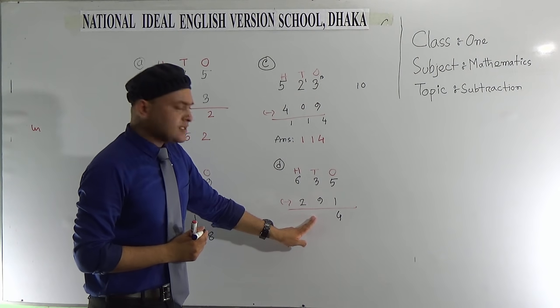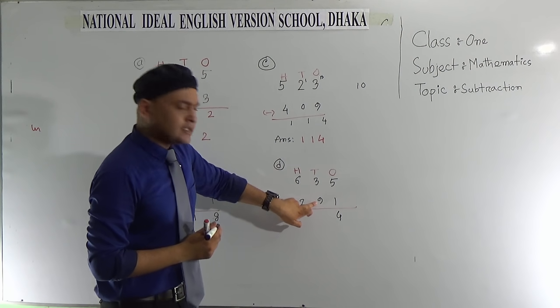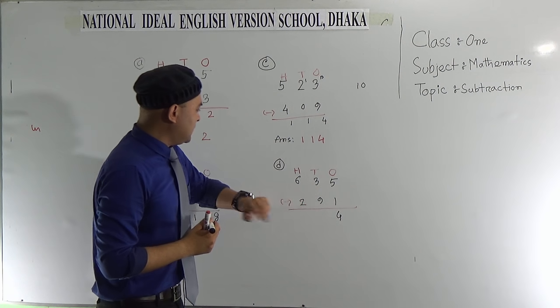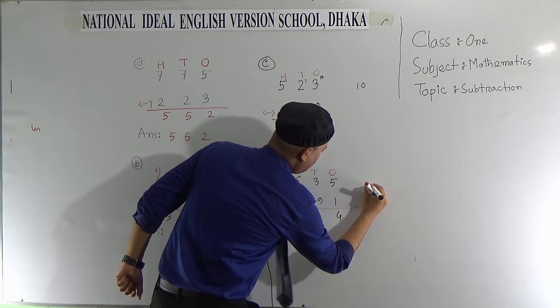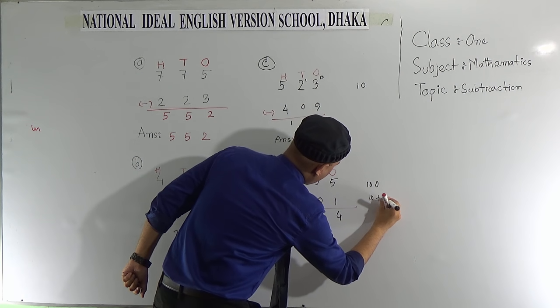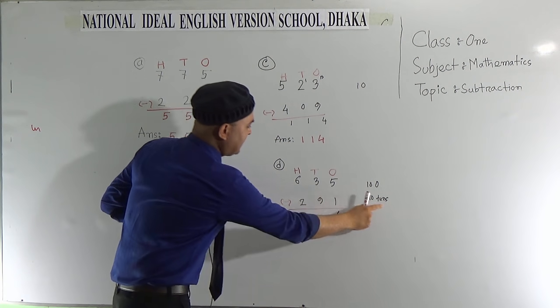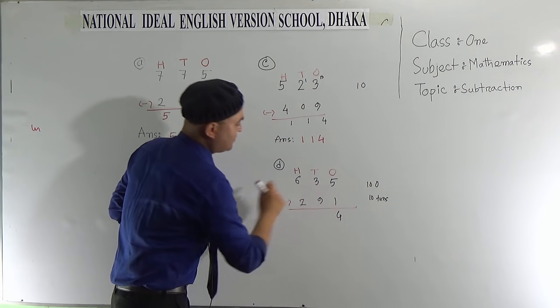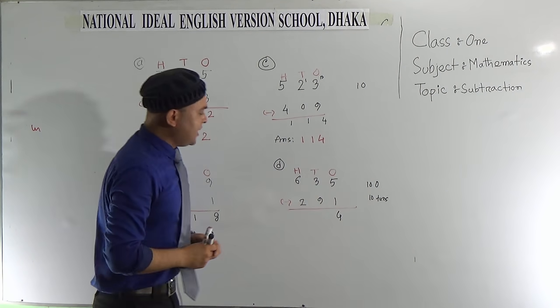Then move to the next column, that is 10's column. Here there is also a problem. 3 is less than 9, so we can borrow 1 from the 100's column. We know that 100 means 10 tens. 100 means 10 tens. So this is 10, and 3. 10 and 3 means 13.